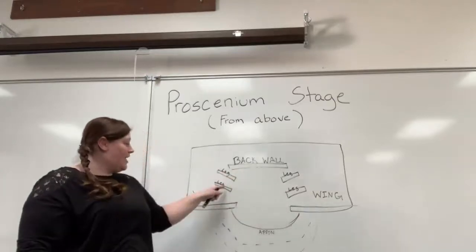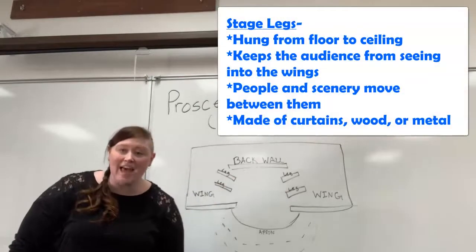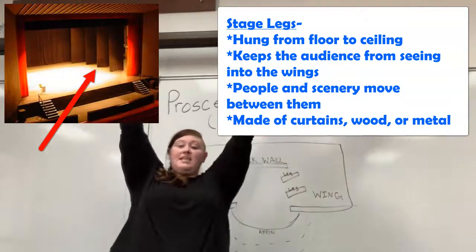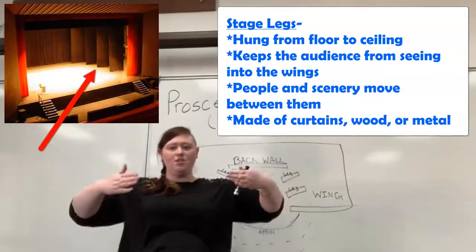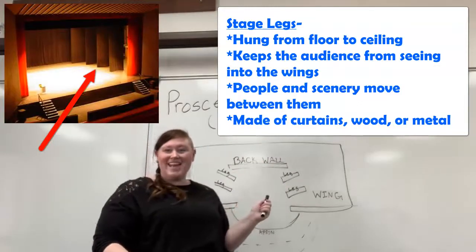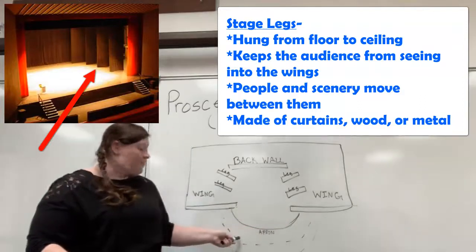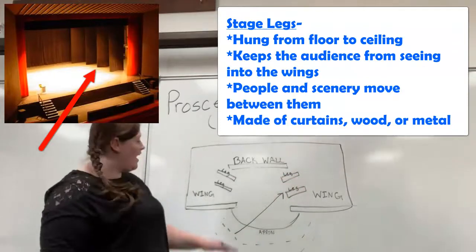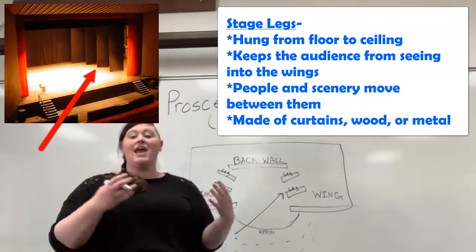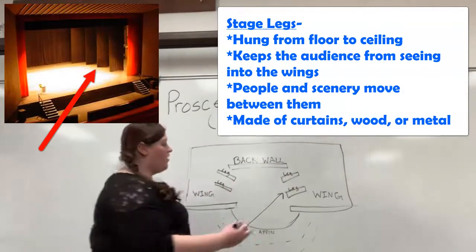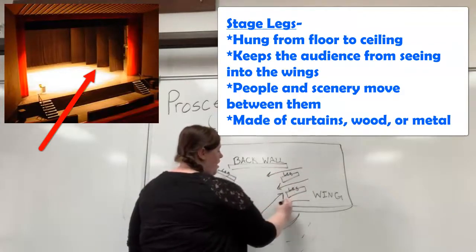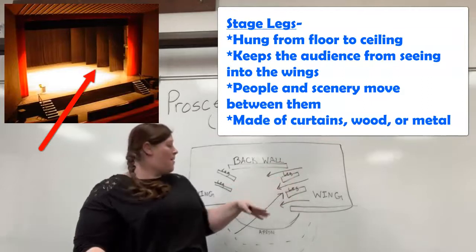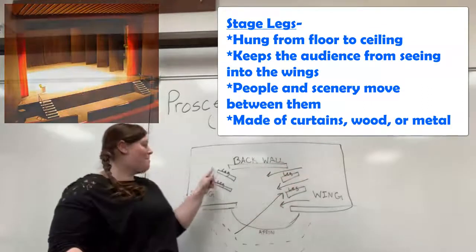You might notice these things on the sides — these are called stage legs. What they are are curtains, or even hard materials like wood or metal. They go from the ceiling and hang all the way to the ground, and they're usually put at an angle to either side of the stage area. This is so that audience members cannot see into the wings, but performers, set pieces, and stagehands can come between them onto the stage. They're not solid — just enough so that the audience cannot see back into the wings.